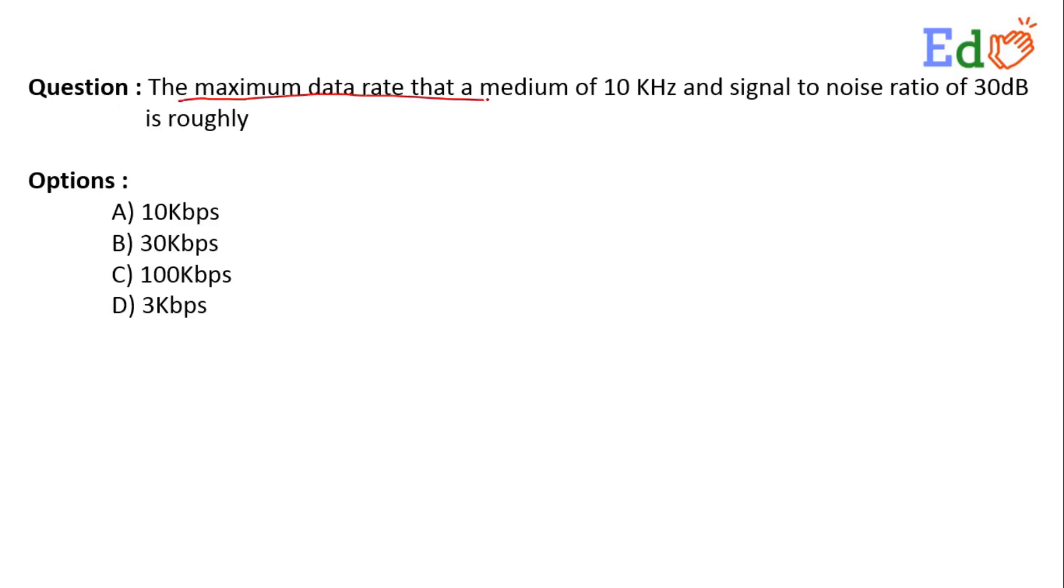The maximum data rate that a medium of 10 kilohertz and signal to noise ratio of 30 dB is roughly 10 kbps, next option is 30 kbps, 100 kbps, and 3 kbps. So now how to answer this query?